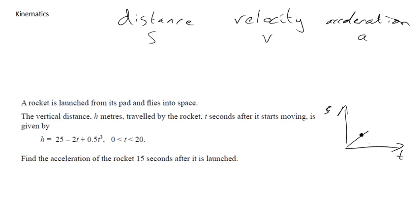So if I differentiate distance, I get velocity. And we also know that if I suddenly change that and make that a velocity-time graph, and I look at the gradient, that's the acceleration. So if I differentiate again, I get acceleration.